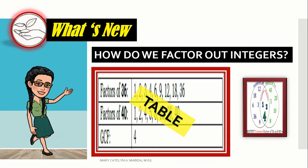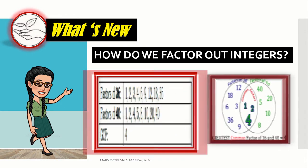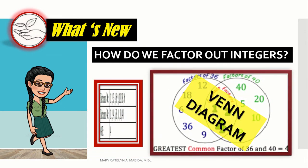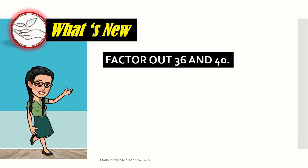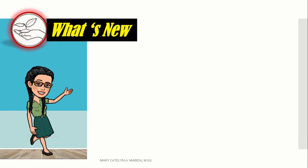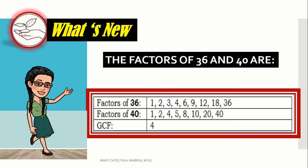We can factor out integers using a table or a Venn diagram. Let us factor out 36 and 40. Observe the table below. The factors of 36 and 40 are written like so.